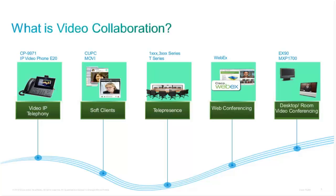There are other types of video equipment — for example, telepresence units, these immersive systems with three or four screens. Then there are also WebEx conference systems like the one we're on right now. There's a very strong video component to that. If you've been on a WebEx meeting with the high quality video component, you can actually get 720p quality video at 30 frames per second as part of a WebEx session as well.